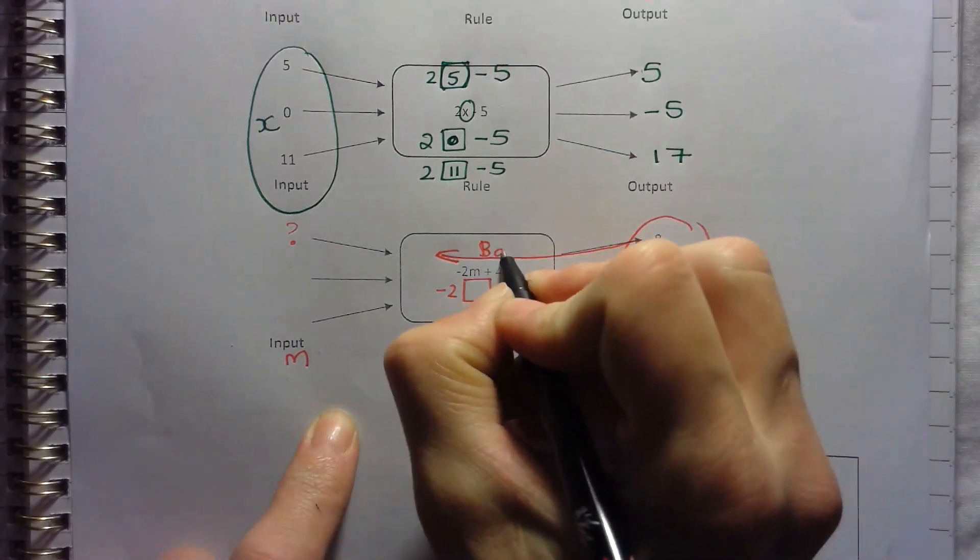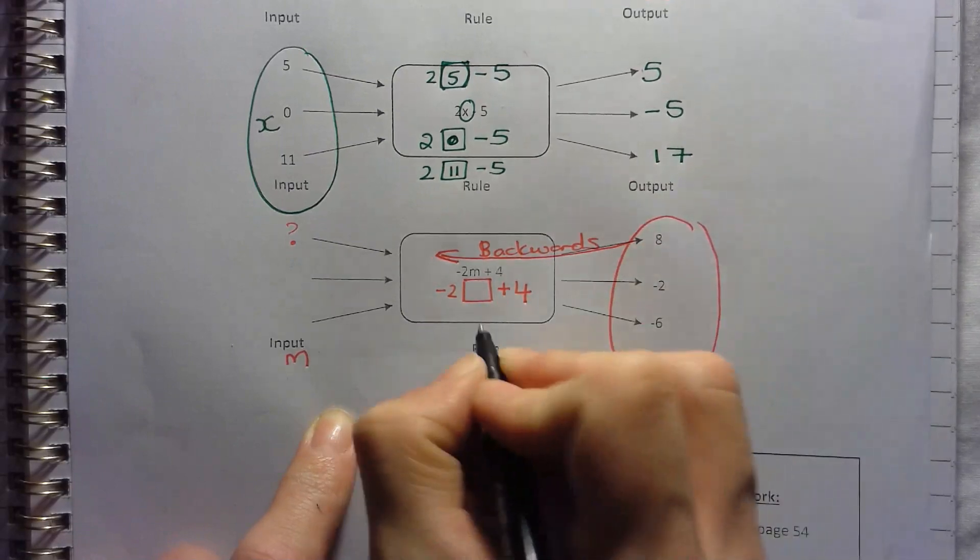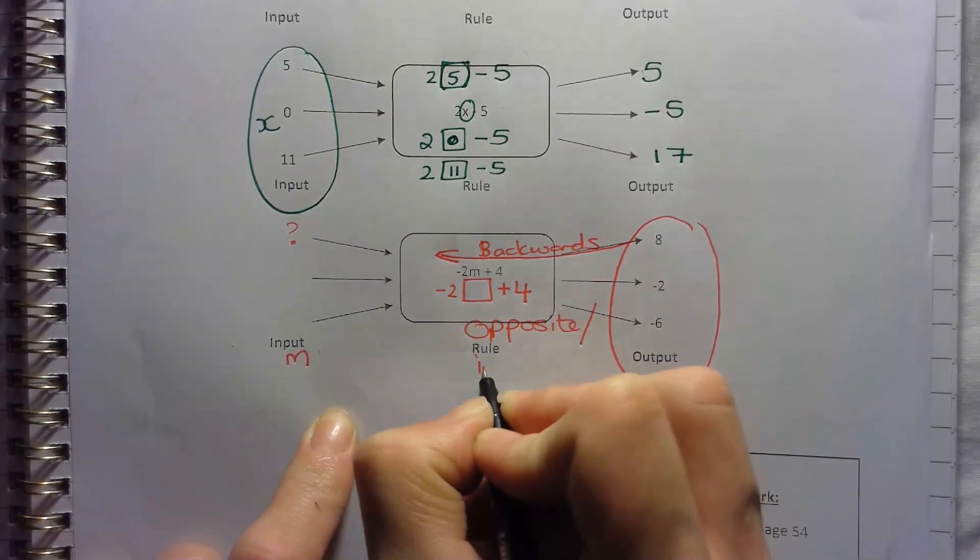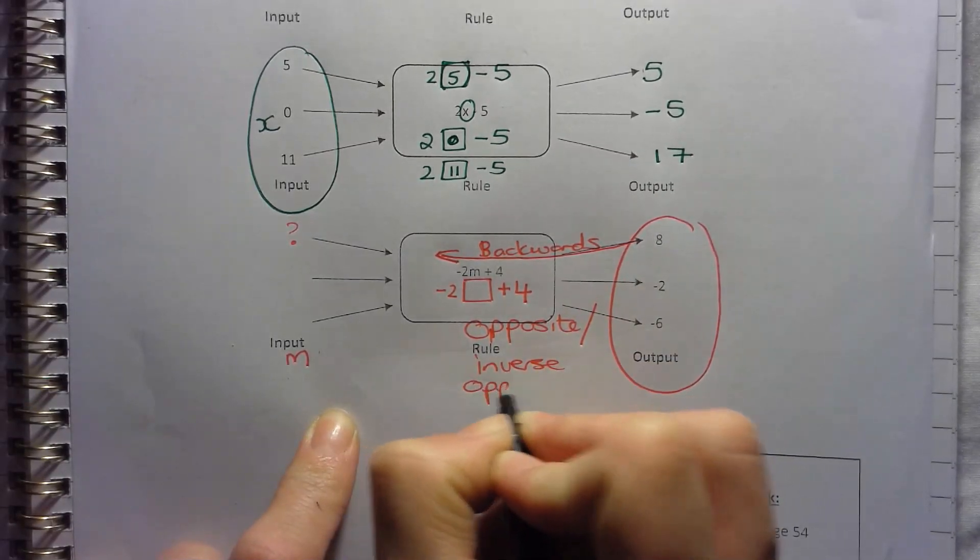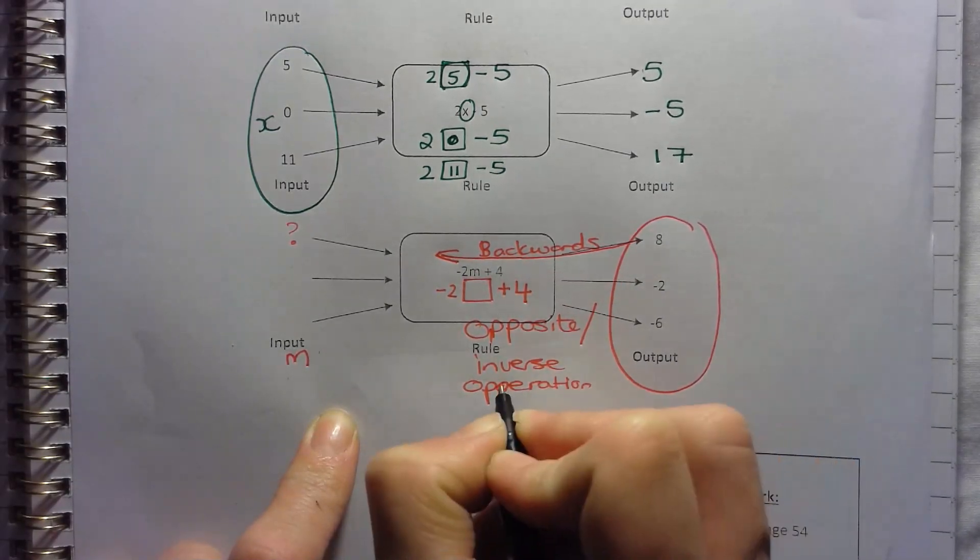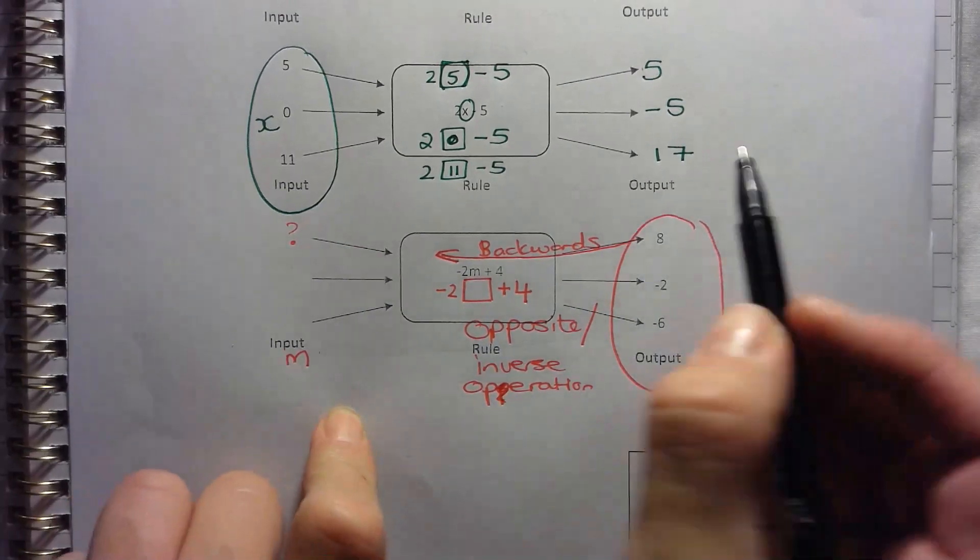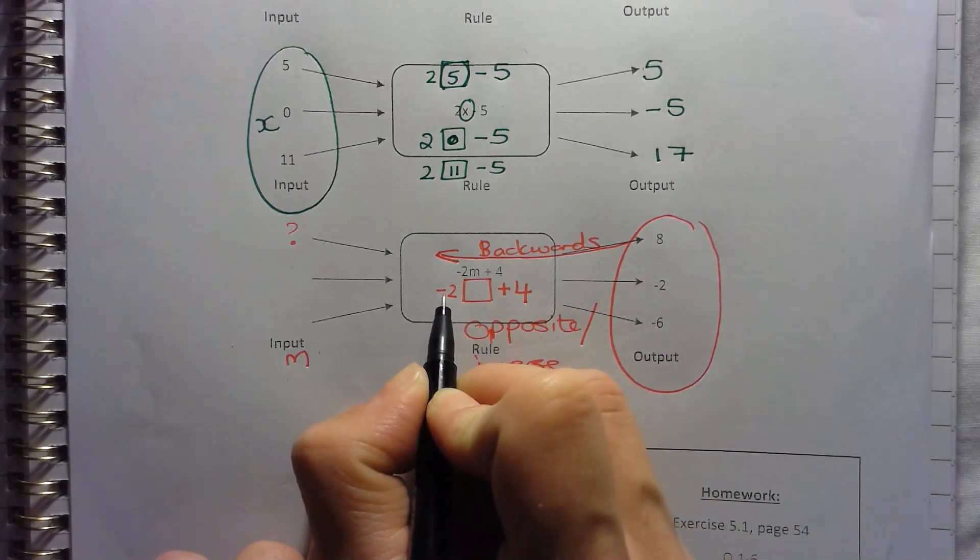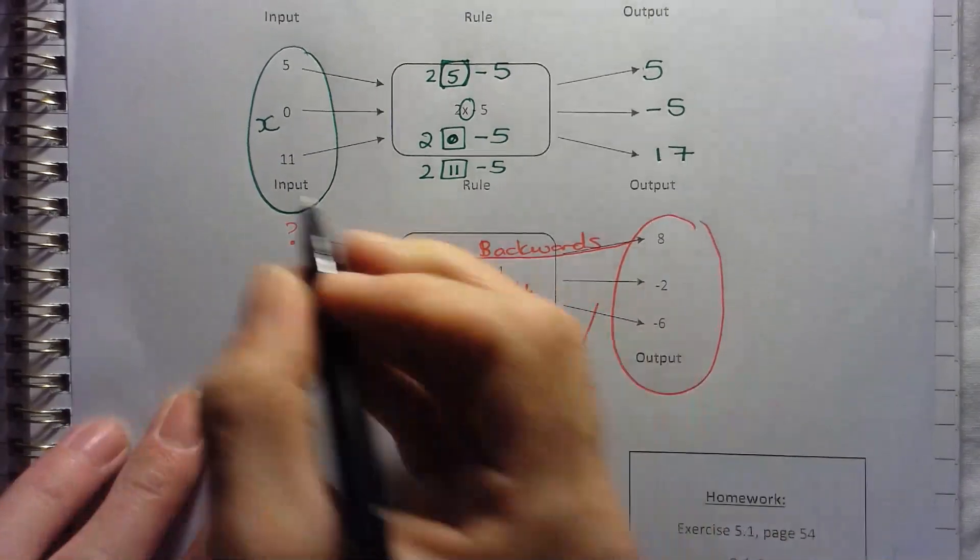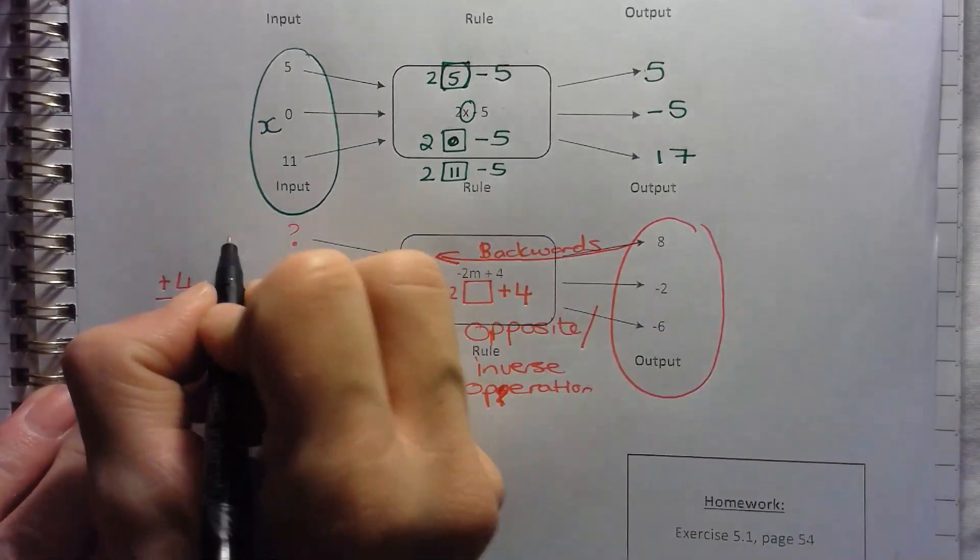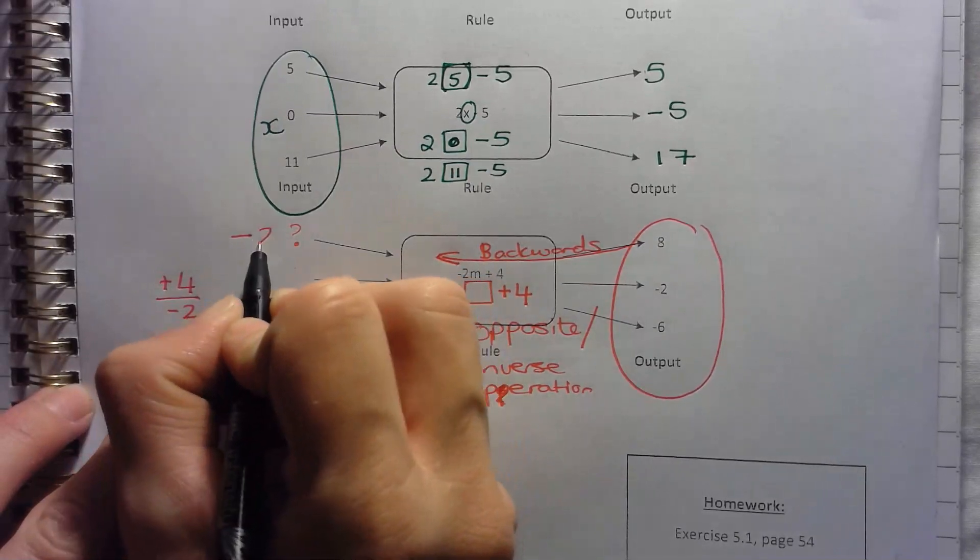So when you go backwards, you do the opposite, or we call it the inverse operation. Alright, so 8 minus 4 is 4, and then 4 divided by negative 2 is going to, if you have a positive, so you can even do it on the side. Positive divided by a negative is going to give me a negative answer. 4 divided by 2 is 2.